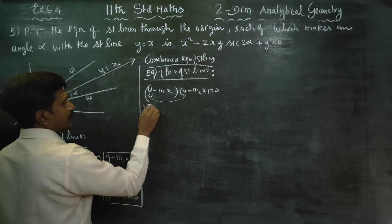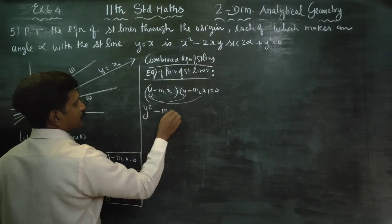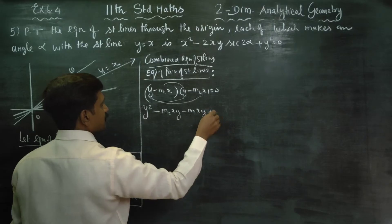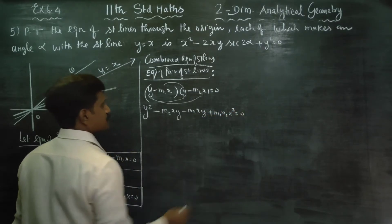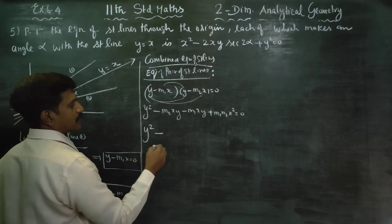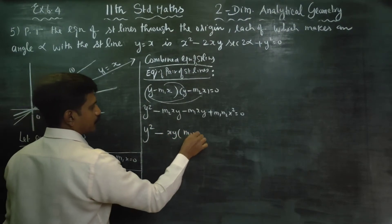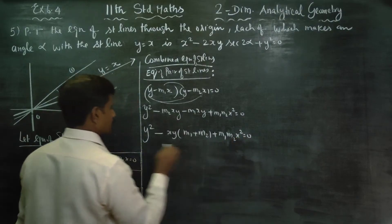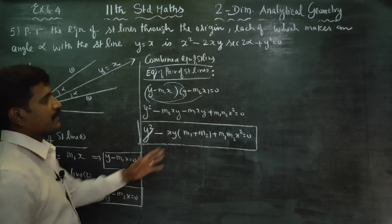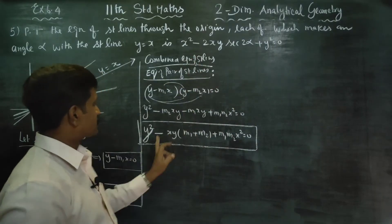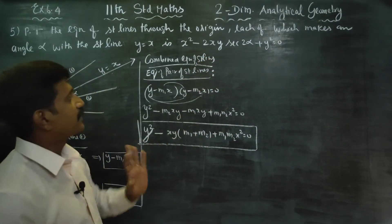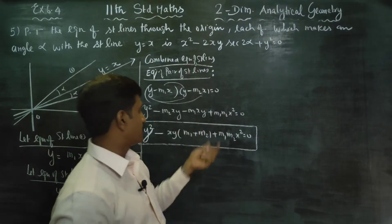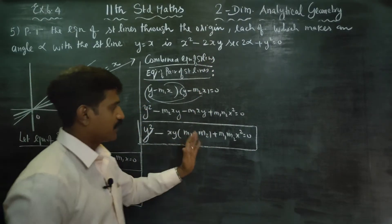Expanding: y × y = y². Then y × (−m₂x) = −m₂xy, and −m₁x × y = −m₁xy, and (−m₁x)(−m₂x) = +m₁m₂x². So the combined equation is y² − (m₁ + m₂)xy + m₁m₂x² = 0.